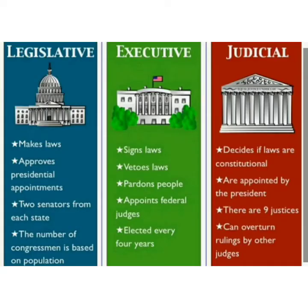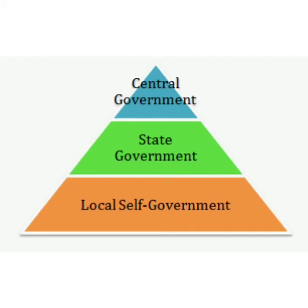Now children, we will learn about the three levels of the government, that is central government, state government, and local self government. As you know that we have numerous towns, cities and villages and a very large population, so it's not possible for one government to look after and take care of the needs of all the villages and states. Therefore there are three levels of government: central, state, and local self government.